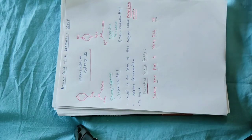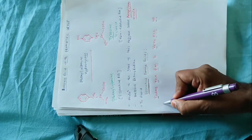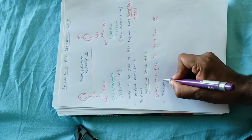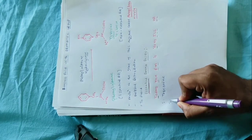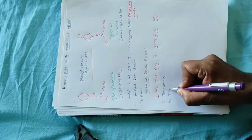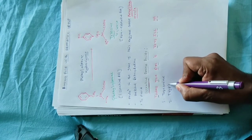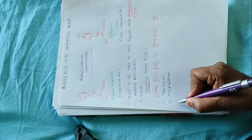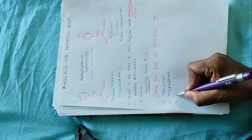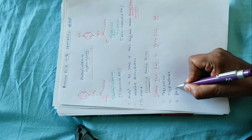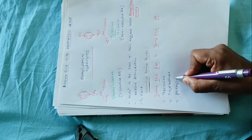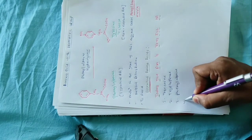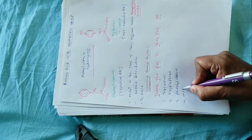यहाँ पे T क्या है — T stands for Threonine, जो 1st amino acid है। 2nd amino acid है Tryptophan। 3rd amino acid है Phenylalanine। और 4th amino acid आपके पास होता है Methionine।